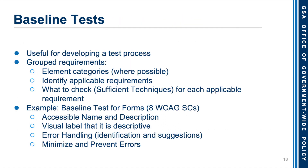The baseline tests are useful for developing a test process. They group requirements together by element categories where possible, identify applicable requirements, and define what to check — otherwise known as sufficient techniques — for each applicable requirement. For example, the baseline test for forms includes eight WCAG success criteria, ranging across accessible name and description, visual label that is descriptive, error handling, identification and suggestions, and minimizing and preventing errors. The baseline attempts to group these together to help in the development of a test process.